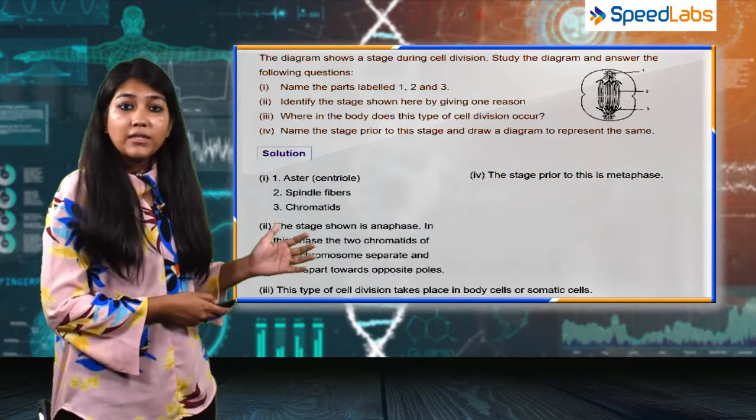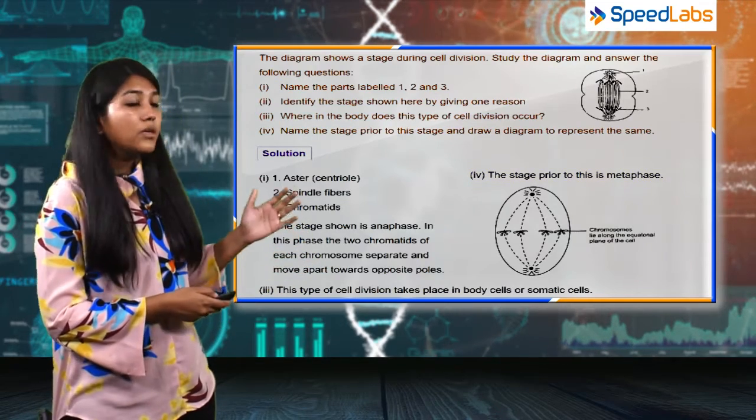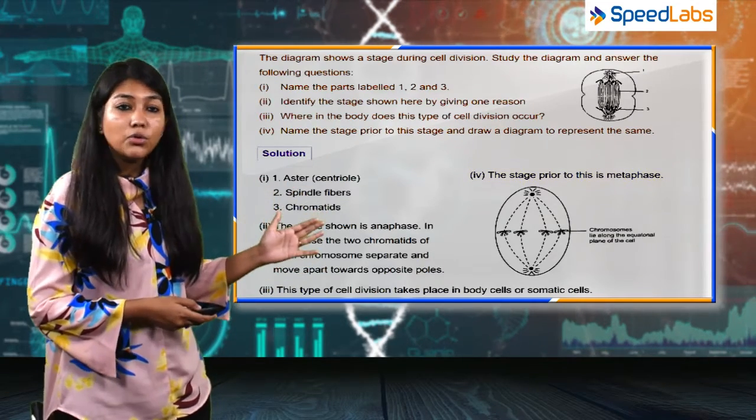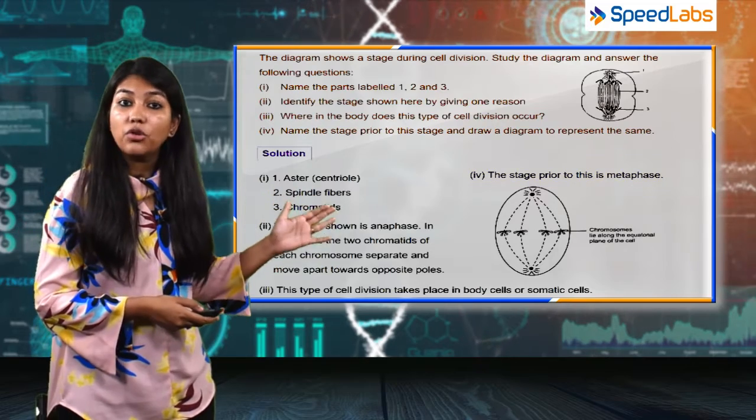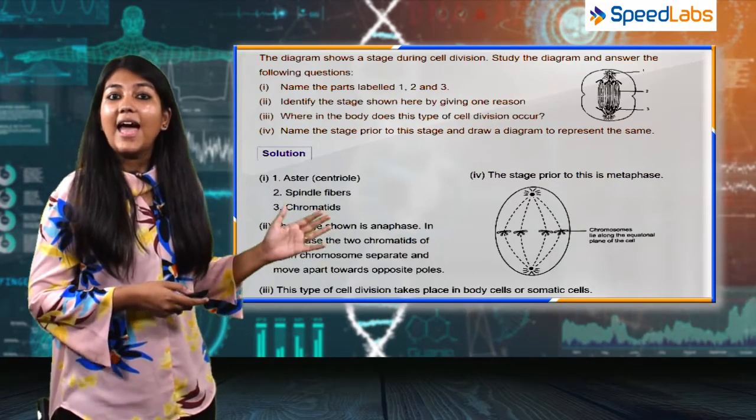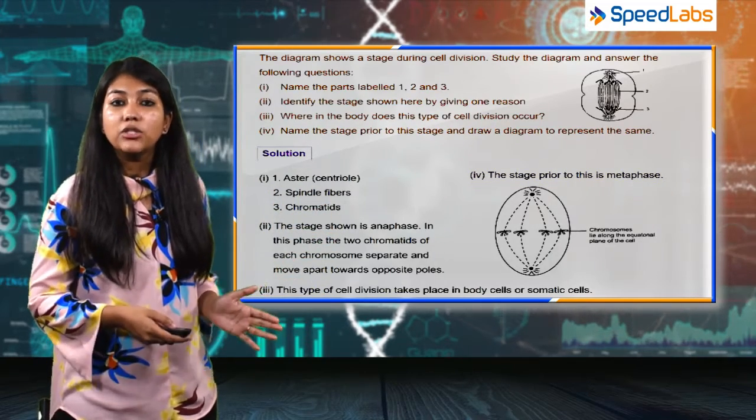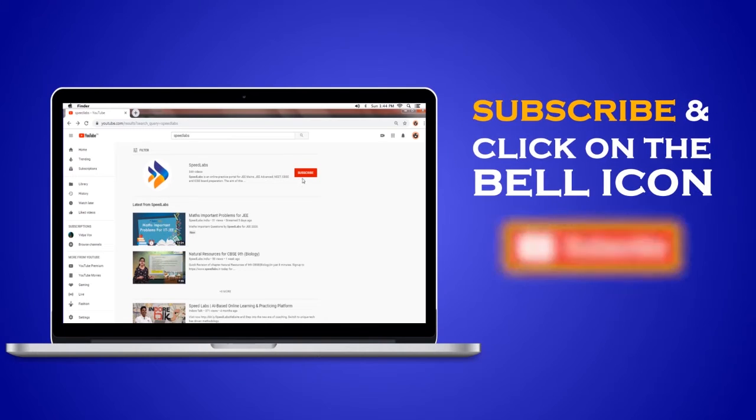The answer is metaphase. Here is a picture where you can see the chromosomes are arranged at the equator of the cell. This is the characteristic feature of the stage metaphase. Thank you.